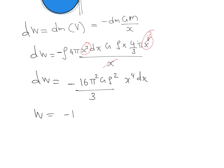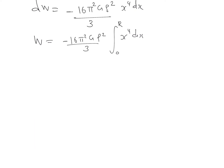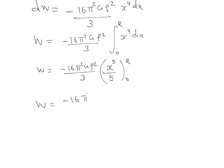Integrating: W = −(16π²Gρ²/3) × ∫₀ᴿ x⁴ dx. This gives minus (16π²Gρ²/3) × [x⁵/5] from 0 to R, which simplifies to minus (16π²Gρ²)/(15) × R⁵.